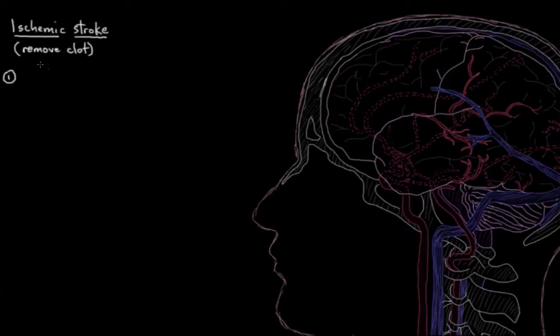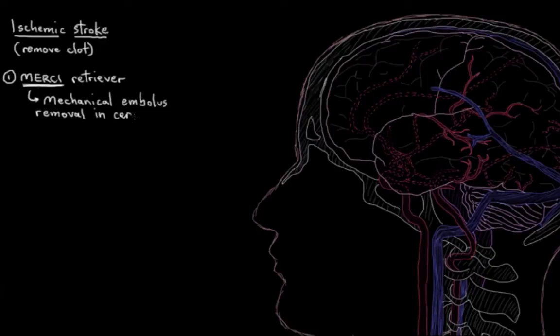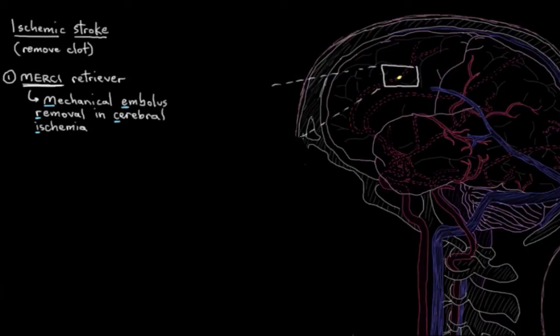One device they might use is called the MERCY Retriever. This was actually the first gadget approved for clot removal after ischemic stroke. Let's look at what MERCY stands for to get an idea of how it works. MERCY is an acronym: Mechanical Embolus Removal in Cerebral Ischemia. Let's look at the general idea without all the technical details.